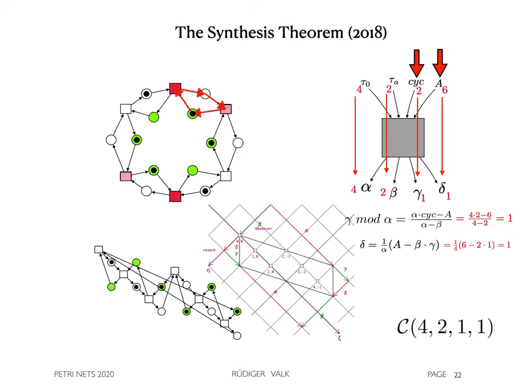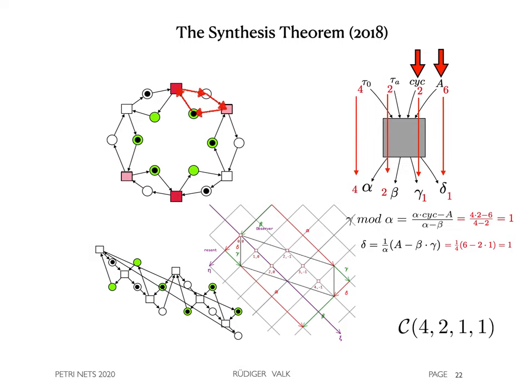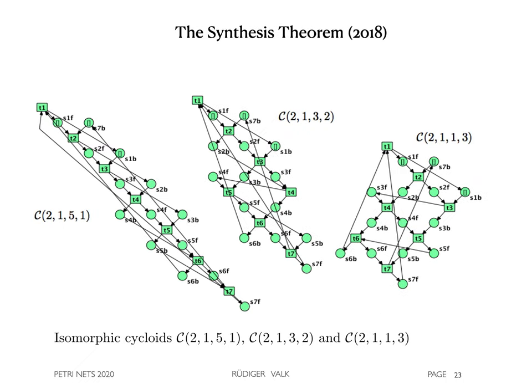However, in general, the result of the synthesis theorem is not unique, but all results are isomorphic if alpha is different from beta. For instance, these three cycloids are isomorphic.